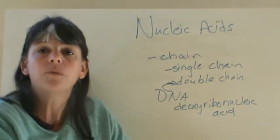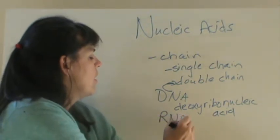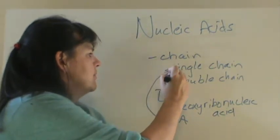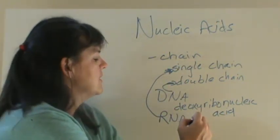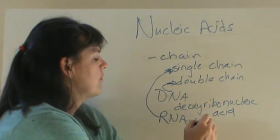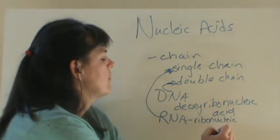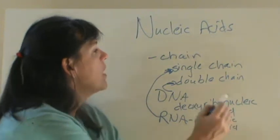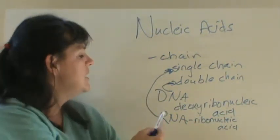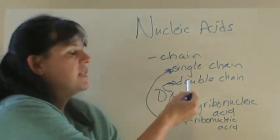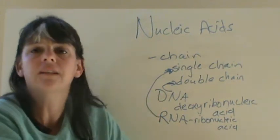And the other one is RNA. RNA is a single chain, and it stands for ribonucleic acid. So that is how we can differentiate between DNA and RNA. DNA will be a double strand, and RNA will be a single strand.